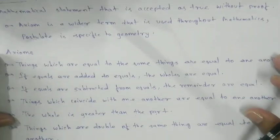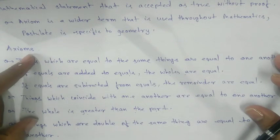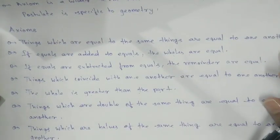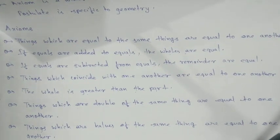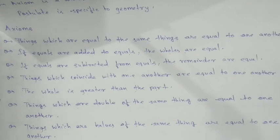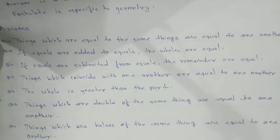Our first target is to complete the axioms. We will see all of them — there are seven axioms. You can write these all by pausing the video. Now, no need to write just yet — try to understand. I will explain all seven axioms one by one.